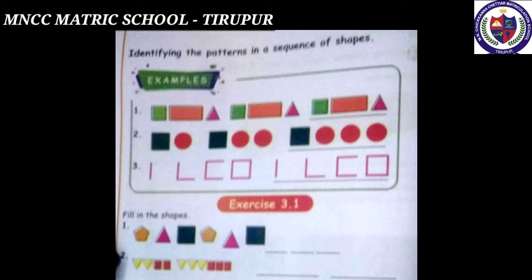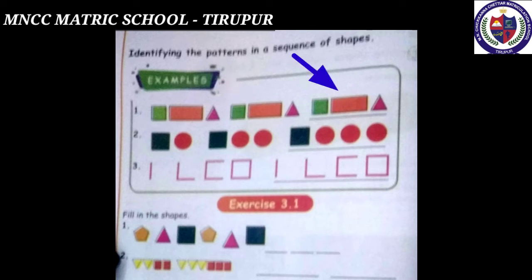See the examples. First: repeated patterns. The shapes in the first sequence are square, rectangle, and triangle. Repeated patterns means this group repeats again: square, rectangle, triangle — square, rectangle, triangle — and so on.